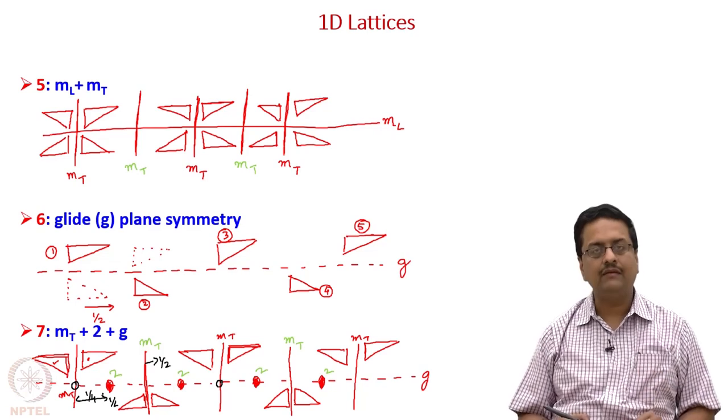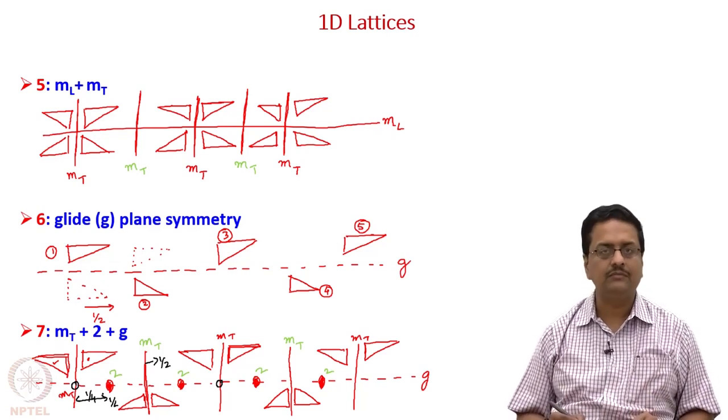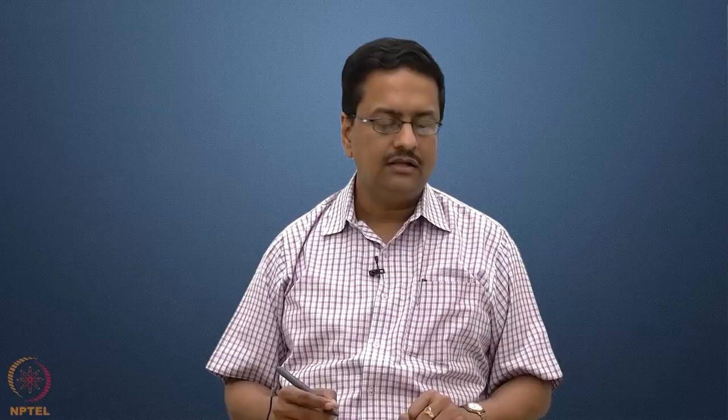There are seven different 1D space lattices as drawn one by one. In the next class, we will start learning about 2D space lattices and their symmetries, and see how symmetry elements — mirrors, glides, and two-folds — generate a large variety of 2D lattices.